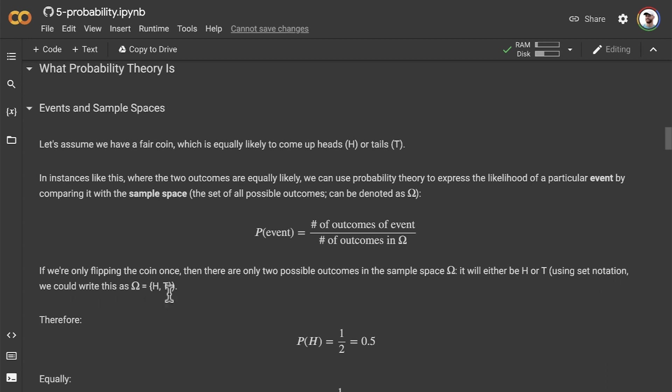To understand this equation, let's use some real numbers. If we're flipping a coin only once, then there are two possible outcomes in the sample space omega. Either the outcome will be heads or it will be tails, H or T. Using set notation, we could write this possible sample space omega as open curly bracket H, comma, T, close curly bracket. These curly brackets indicate what all the possibilities are, and we use a comma to break up the different possibilities.